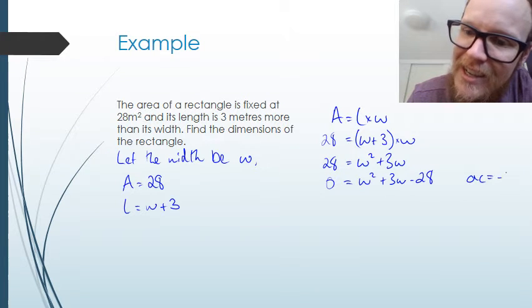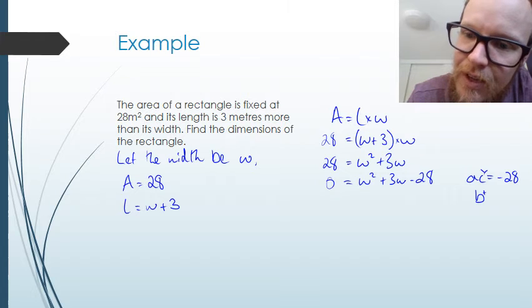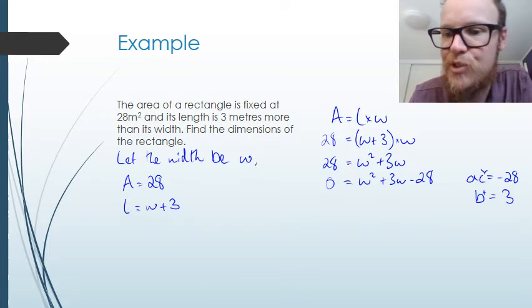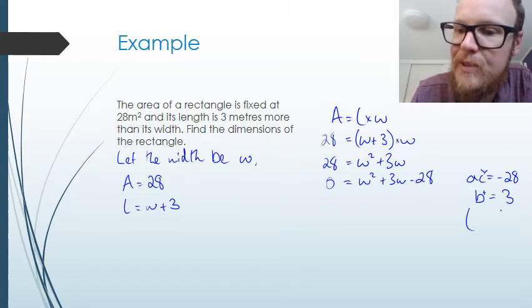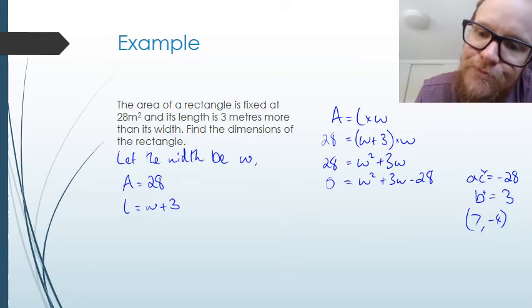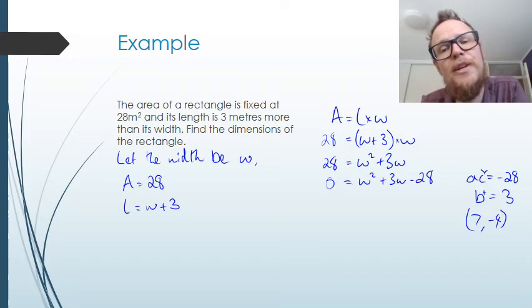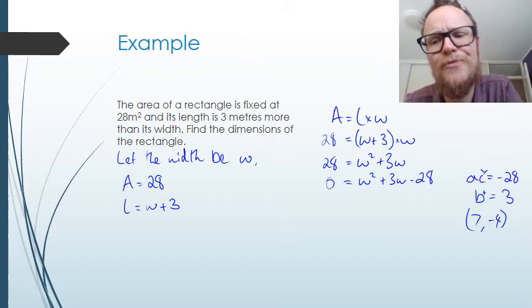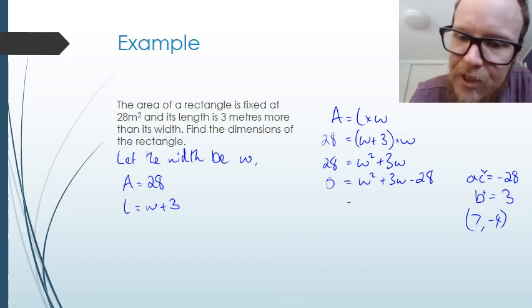So let's look at first way of factorizing. ac in this case is negative 28. And b, it is 3. b is 3. So two numbers that multiply to give negative 28, add to give 3. 7, negative 4. 7 minus 4 is 3. 7 times negative 4 is negative 28. It's a thing of beauty.